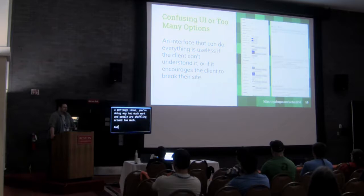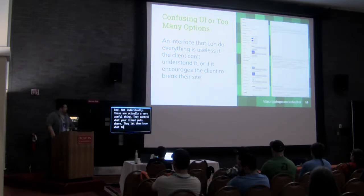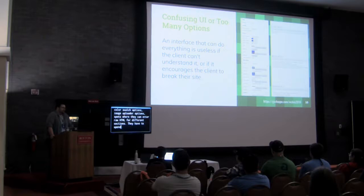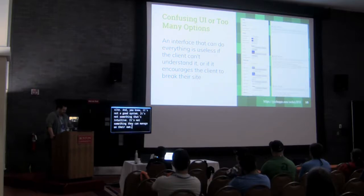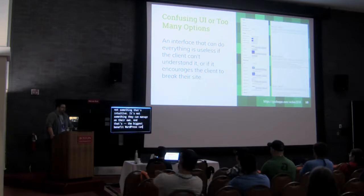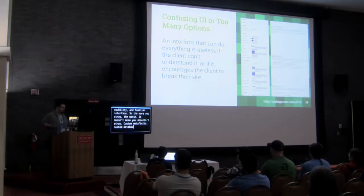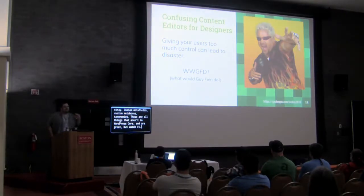Custom user interfaces — these aren't bad individually; they're actually a very useful thing. They control what your client puts where and let them know what to do when they're confused. But when they get out of hand, boy do they get out of hand. This is a client that wanted very strict design control of everything on their site — about a thousand color swatch options, image uploader options, spots for different sections. They have to spend several days training people for this site. The biggest benefit WordPress offers is easy trainability, easy usability, and familiarity — the more you stray from that, the harder it gets.